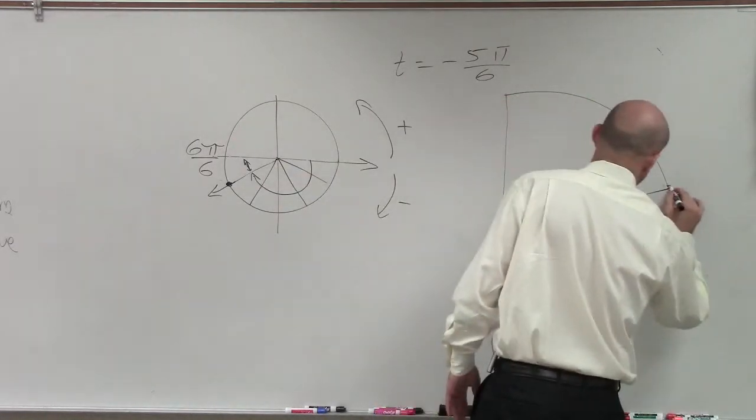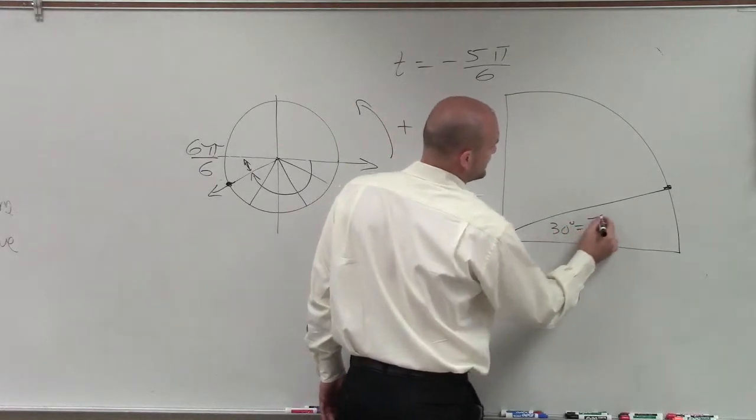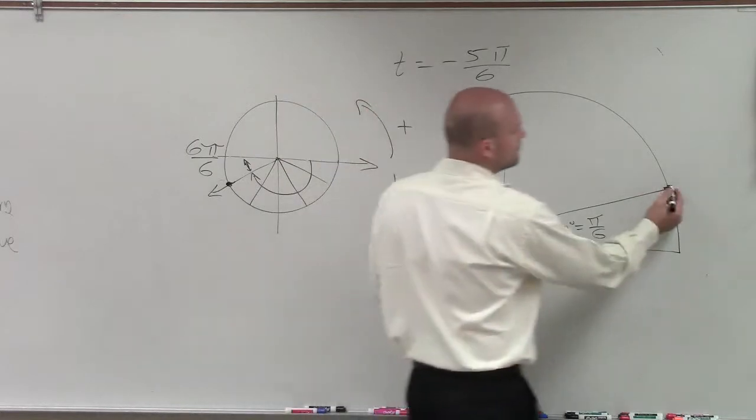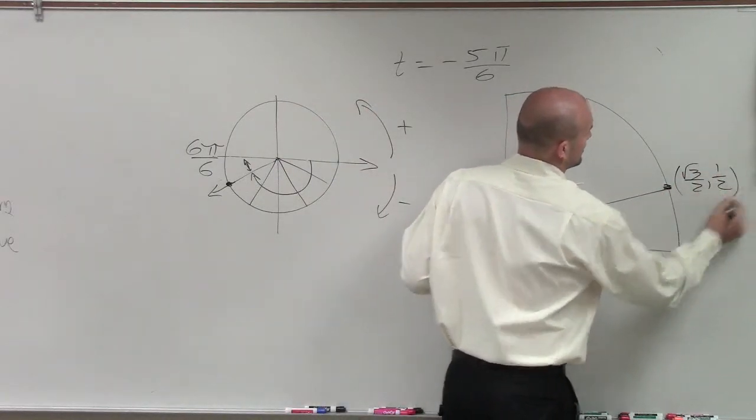So therefore, if I remember, the first point that I found, which was 30 degrees, is the same thing as pi over 6. So I need to find what that distance is. And by knowing the unit circle, this point is square root of 3 over 2 comma 1 half.